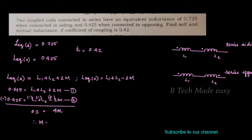Now we get M equals 0.3 divided by 4, which is equal to 0.075 Henry.